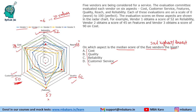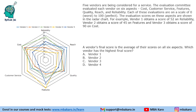A vendor's final score is the average of their scores on all six aspects. The question asks which vendor has the highest final score. For this we might need some calculation to add up totals, but we can also use an alternative comparison approach, which would be much faster.